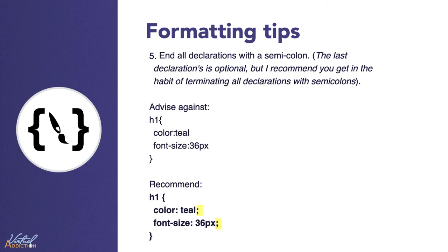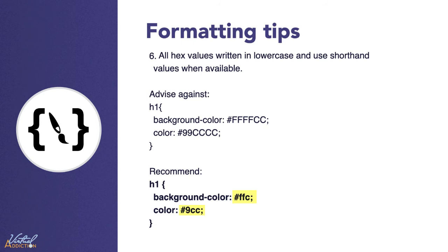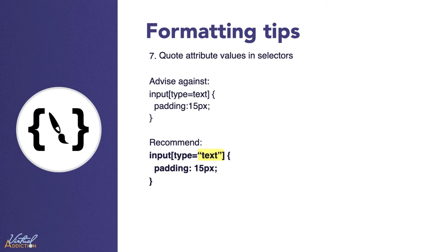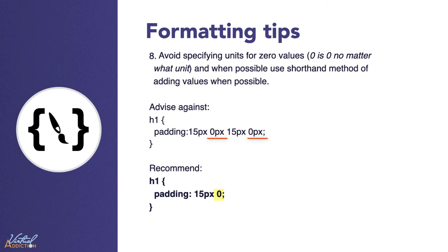The last declaration's semicolon is technically optional, but your code is more error prone without it. You should use lowercase characters when making hex values — lowercase letters are much easier to discern when scanning a document as they tend to have more unique shapes. When possible, use shorthand hex values. So instead of using 99CCCC, we could simply write 9CC. Quote attribute values in selectors — for example, input type equals text. It is optional in some cases, but it is good practice for consistency. You should avoid specifying units for zero values, so there's no need to write margin zero pixels — you can just write zero.